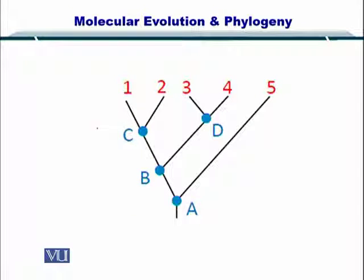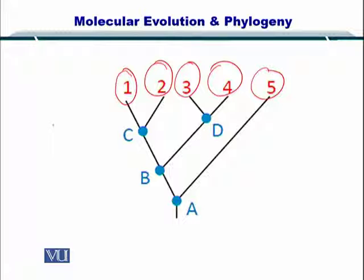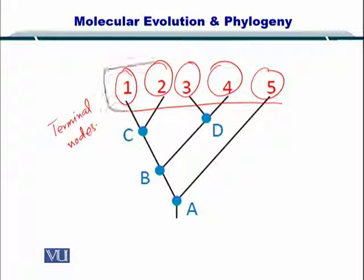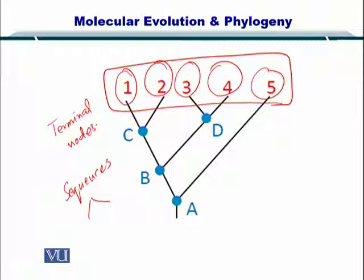Let's take an example of a simple tree that can be developed by looking at the sequences. Here are the terminal nodes, which are the sequences. These sequences can be DNA, RNA, or protein, and you can look at their relationships in terms of evolution.